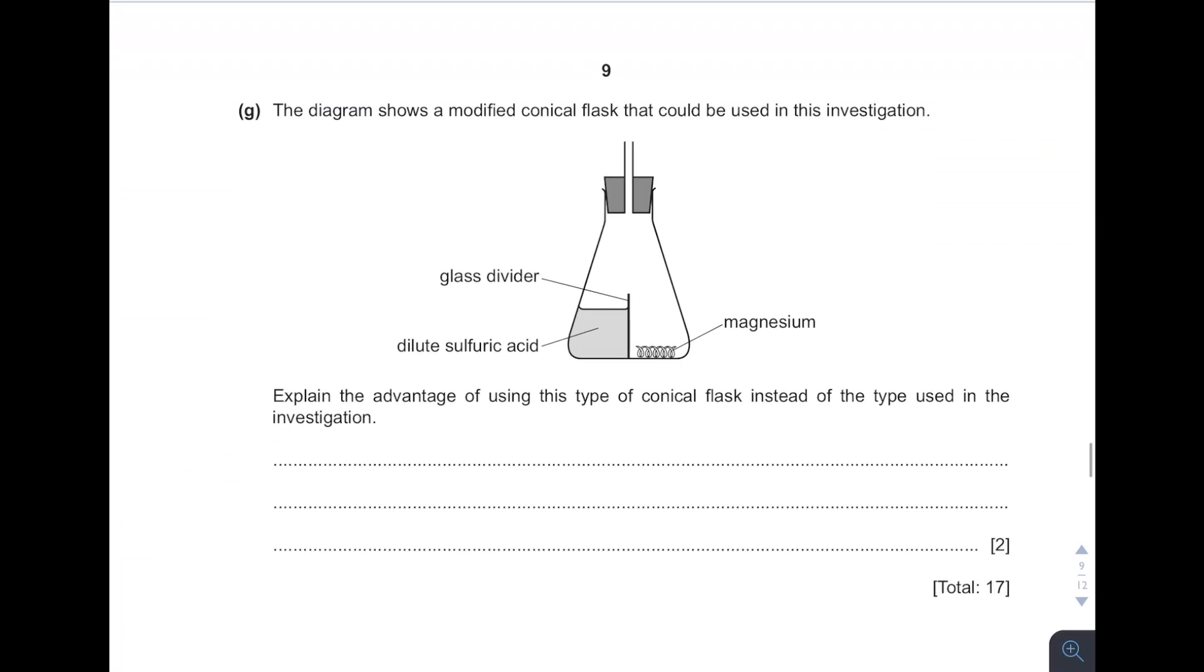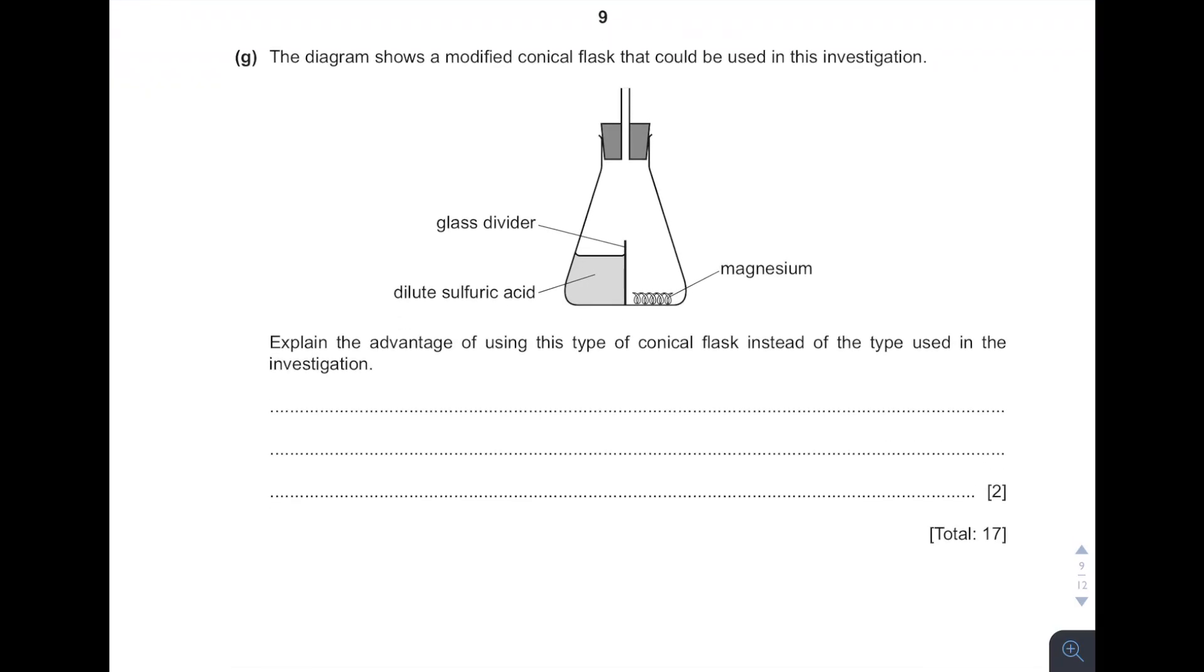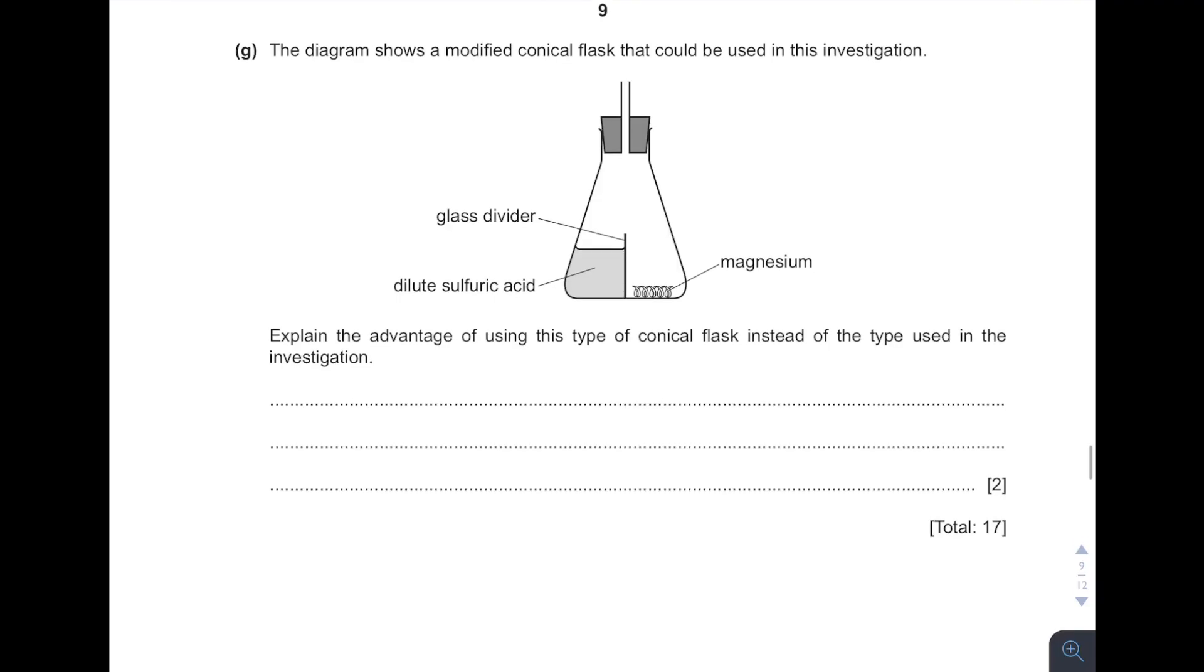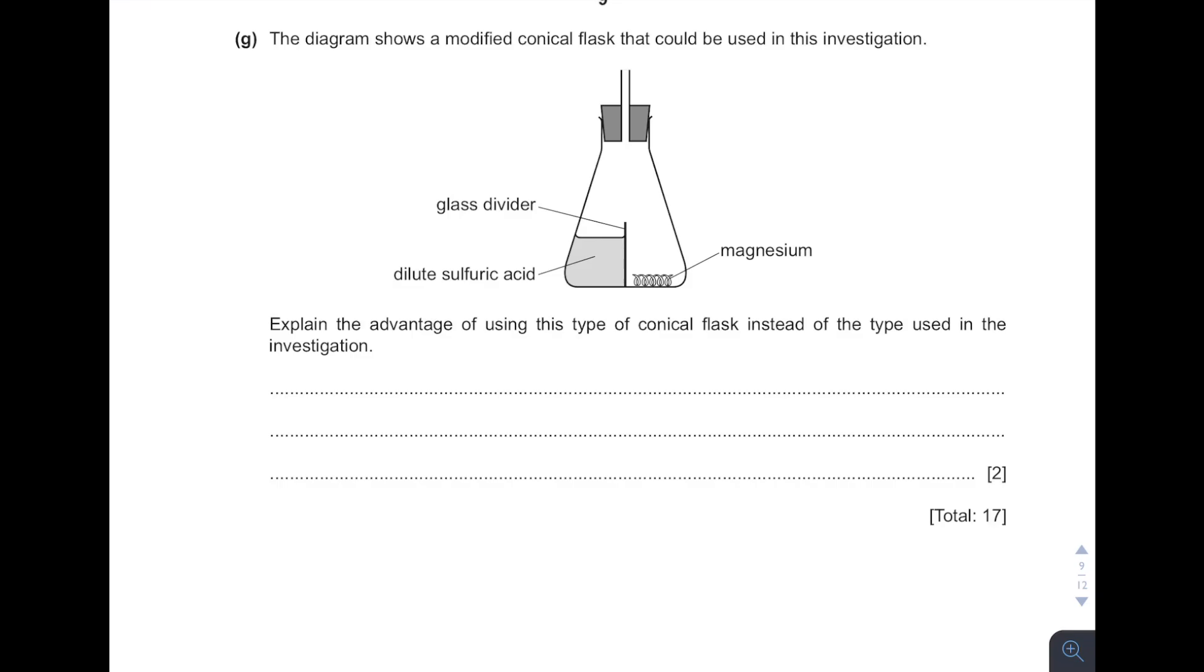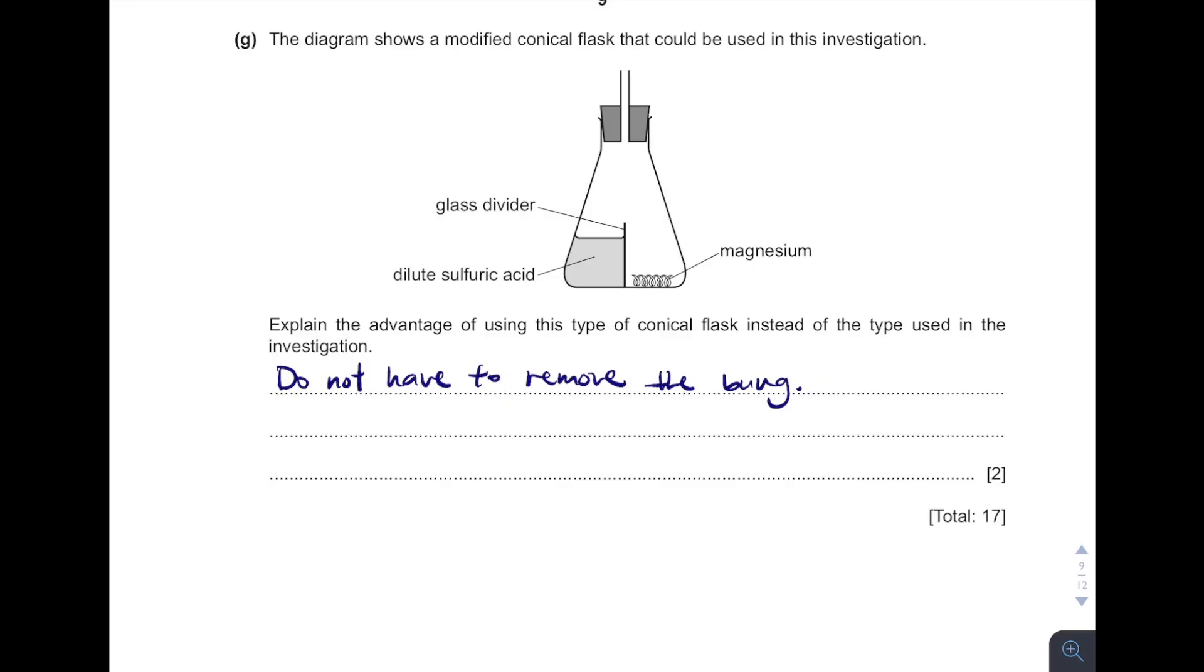Then followed by the next one. Explain the advantage of using these types of conical flask. So what's the advantage? So in this case, listen, in this case we do not need to open and close the bung to add reactions anymore. So we do not have to remove the bung, which eventually it helps to ensure no gas escape. Because this experiment is about the collection of gas, so it is very important for us to ensure no any single gas will escape from the flask. If not, it will eventually affect the result.